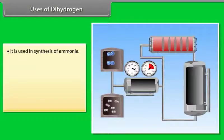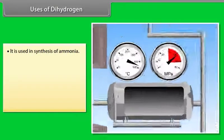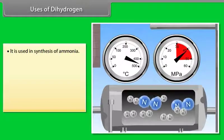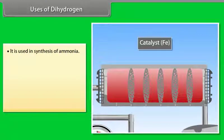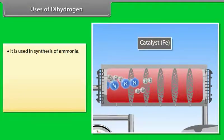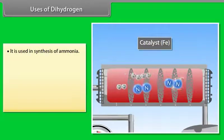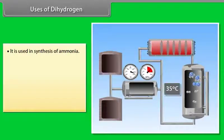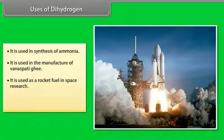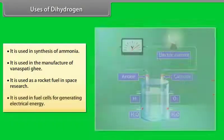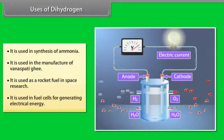Uses of dihydrogen: It is used in synthesis of ammonia. Nitrogen and hydrogen passed to heater, where these are heated up to a certain temperature. After that, they are compressed and then passed to heater, where the reaction takes place. After that, the mixture is passed to waste heat boiler, from which ammonia is cooled and then stored, and nitrogen and hydrogen are recycled. It is used in the manufacture of Vanaspati Ghee. It is used as a rocket fuel in space research. It is used in fuel cells for generating electrical energy.